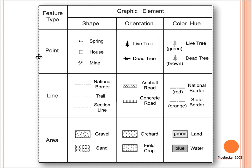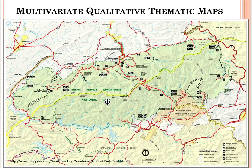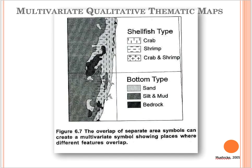We're using one or a combination of point, line, or area features. This is an example of a multivariate qualitative thematic map showing different colored polygons for national park versus national forest. We can also see line features in red showing boundaries, and point features showing where specific amenities are located on the map.